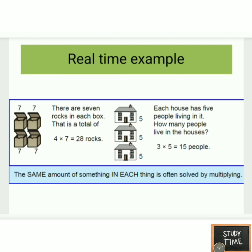In the second example, there are five people in each house and there are three houses. Five plus five plus five equals three cross five, that is 15 people. Note that each house has the same number of persons. Suppose one house has three people and another has four, we cannot multiply. So the amount should be equal in all the things that we are multiplying.